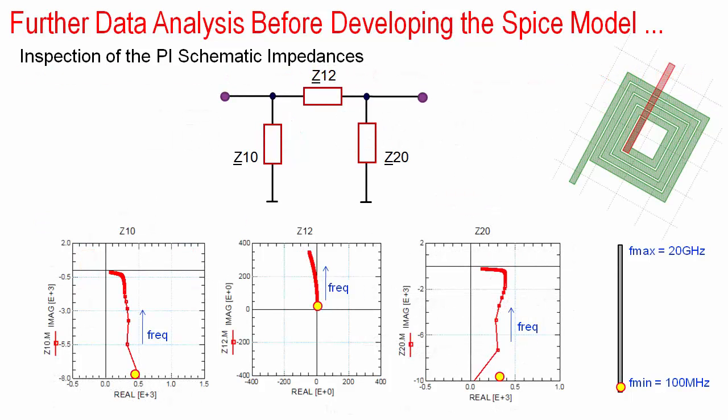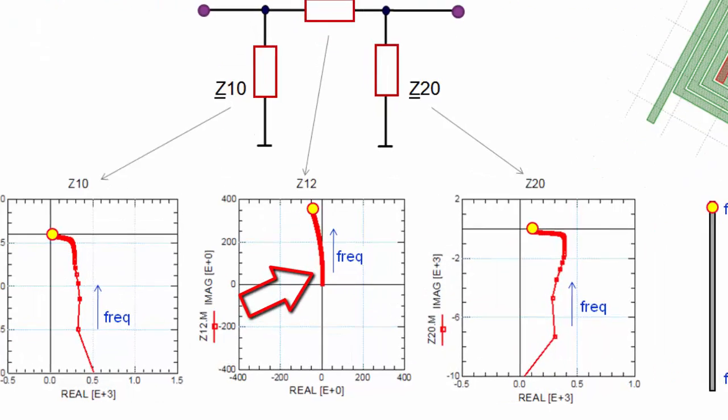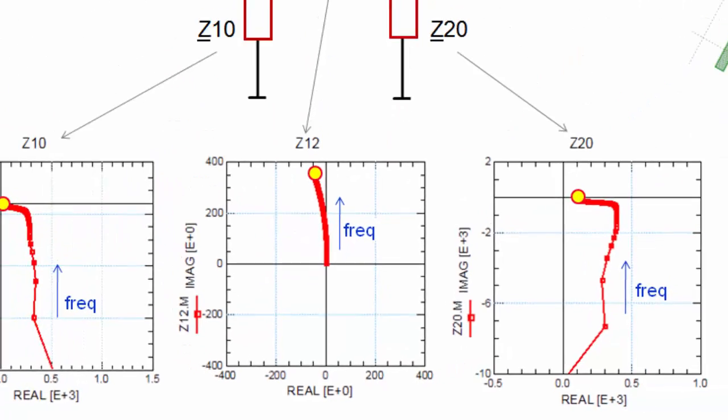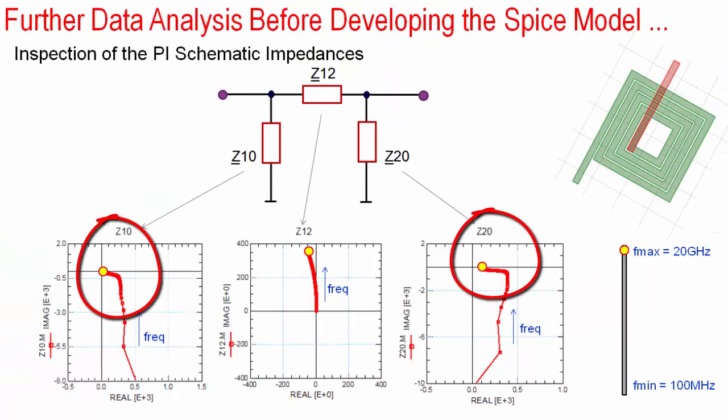The dominant vertical Pi schematic branch, represented by Z12, exhibits an inductive performance, with a reduction in resistance even into negative values for highest frequencies. The two branches to ground, Z10 and Z20, represent each a capacitor with frequency-dependent resistive loss.